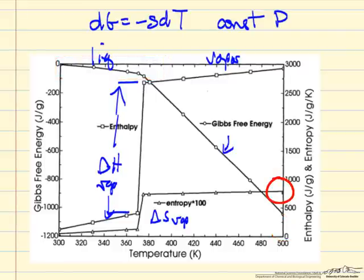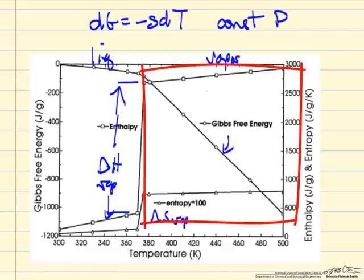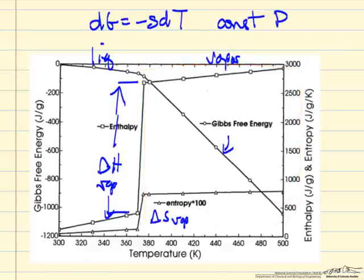Entropy is a much larger term for the vapor, so notice the Gibbs free energy changes much more for the vapor. And also very important to notice that when we have the phase change, right here we go from liquid to vapor at constant temperature and pressure, there's no change in the Gibbs free energy. That ends up being one of our equilibrium criteria.